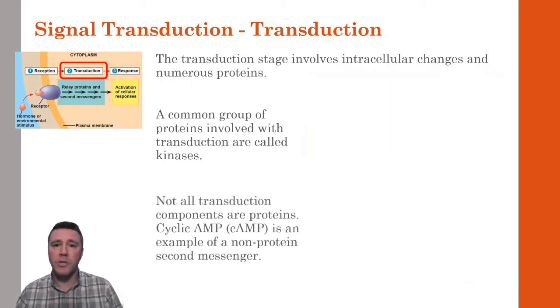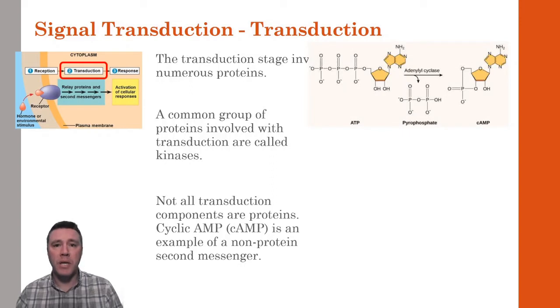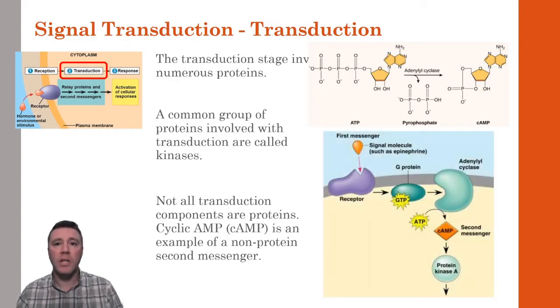Another component of the transduction stage involves cyclic AMP, which isn't a protein at all. Related to ATP, cyclic AMP is a second messenger whose production is by the alpha subunit of the G-protein. Adenylyl cyclase removes two phosphates from ATP to form cyclic AMP, which goes on to activate protein kinase A. As long as the G-protein is associated with adenylyl cyclase, cyclic AMP will be produced. This is an important mechanism by which cells can amplify their response to a chemical signal. A single ligand molecule can result in the production of numerous cyclic AMP molecules and lead to the activation of numerous kinases.